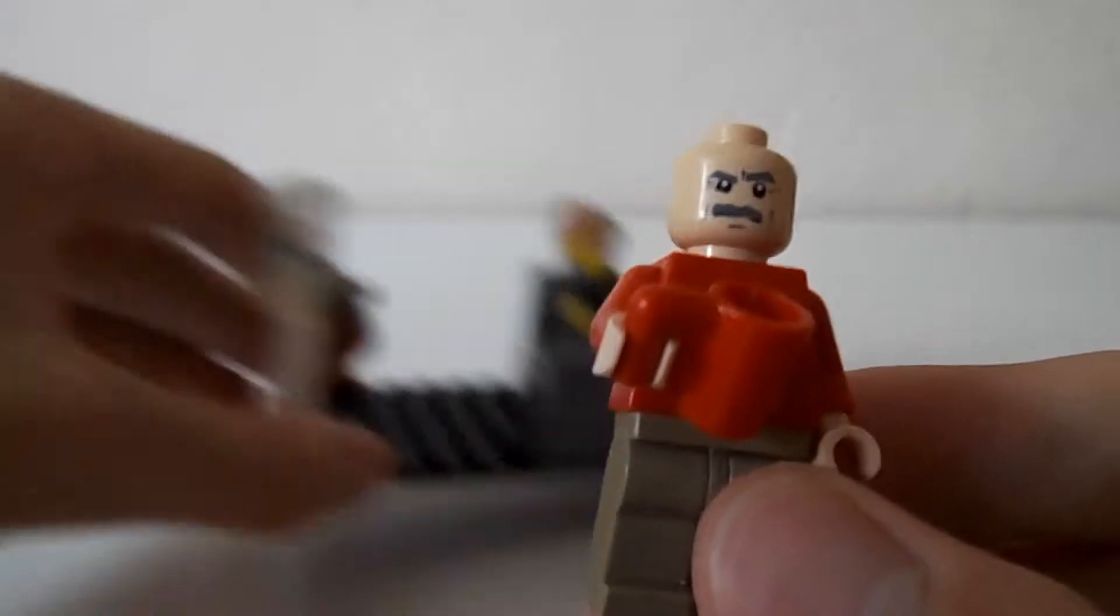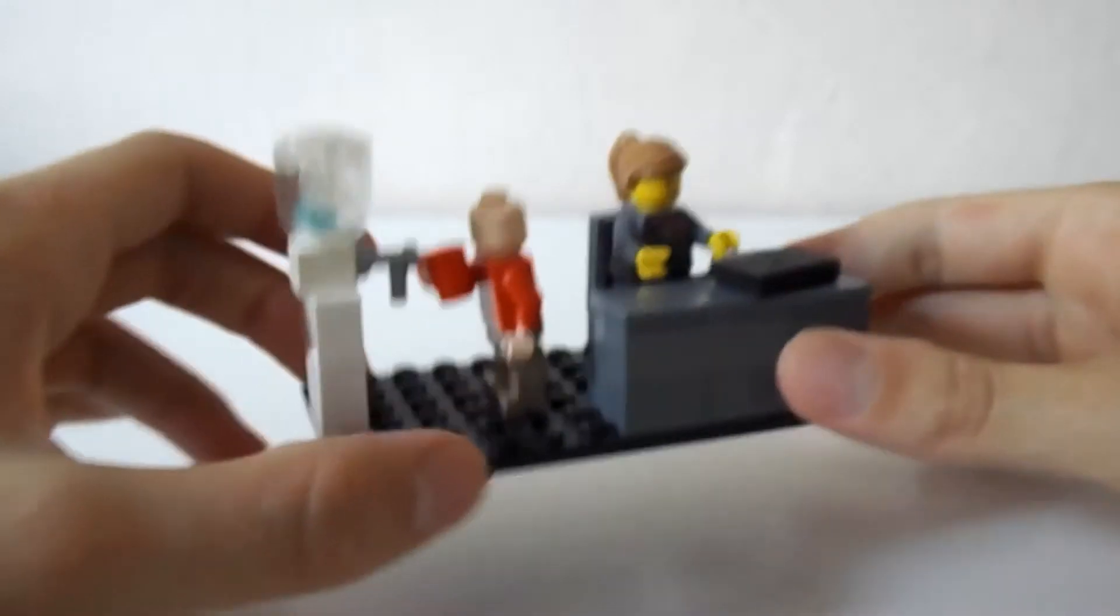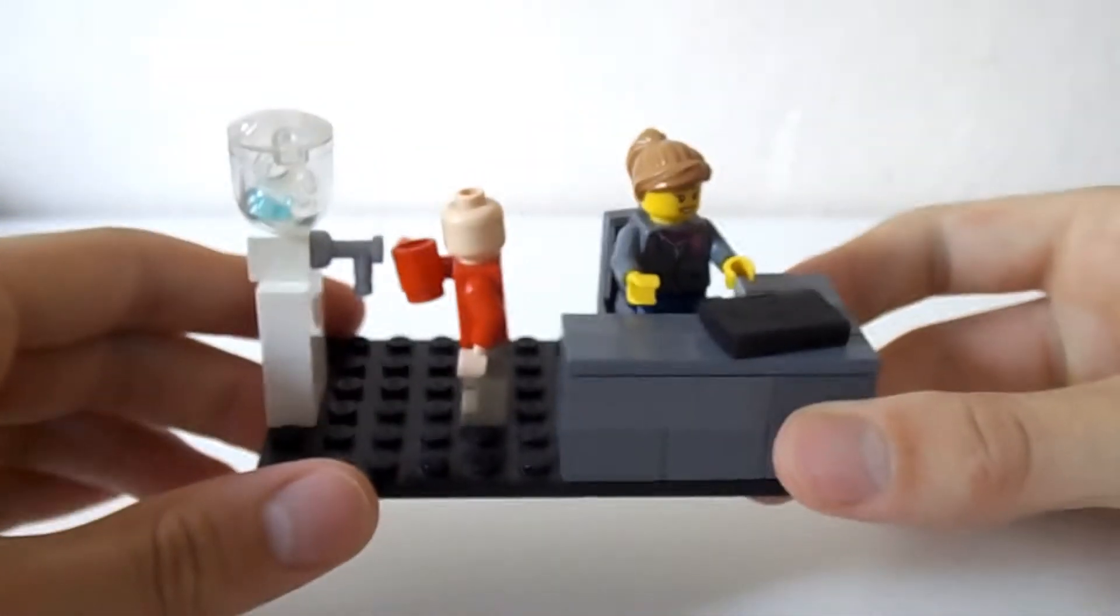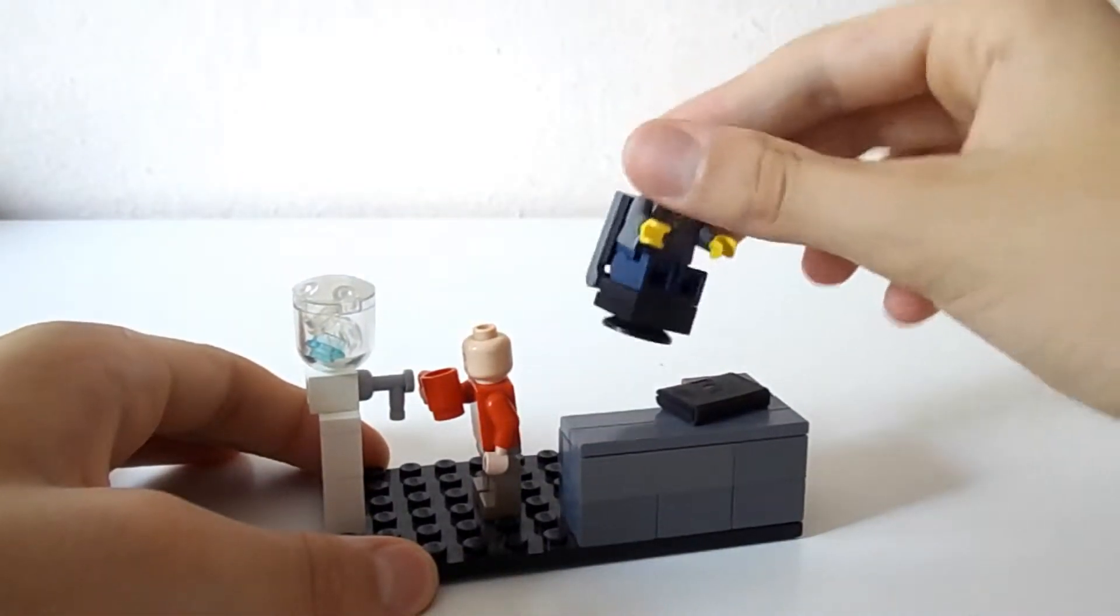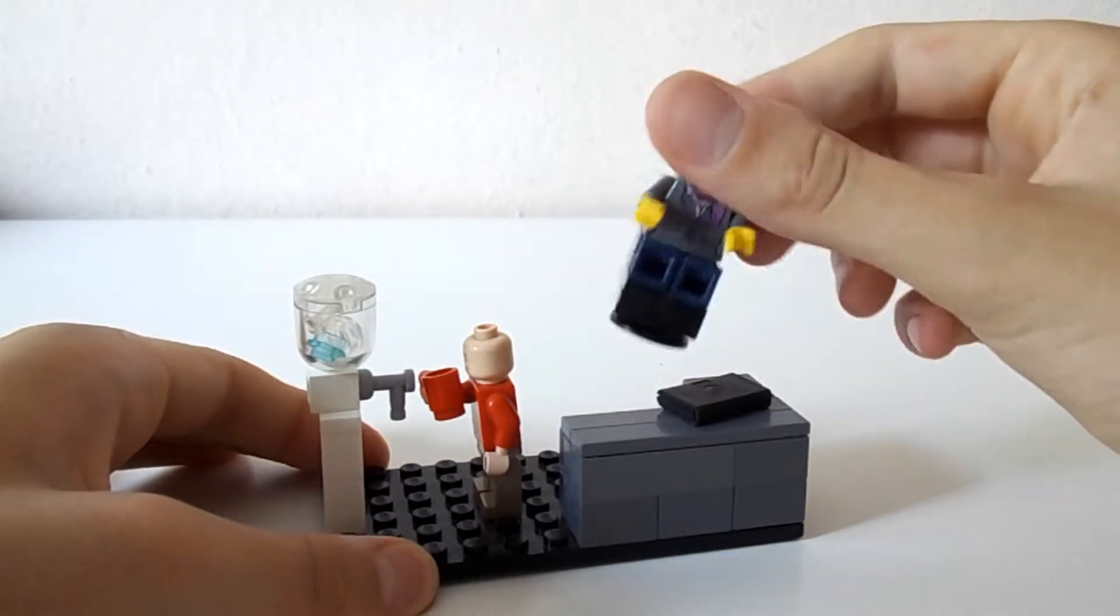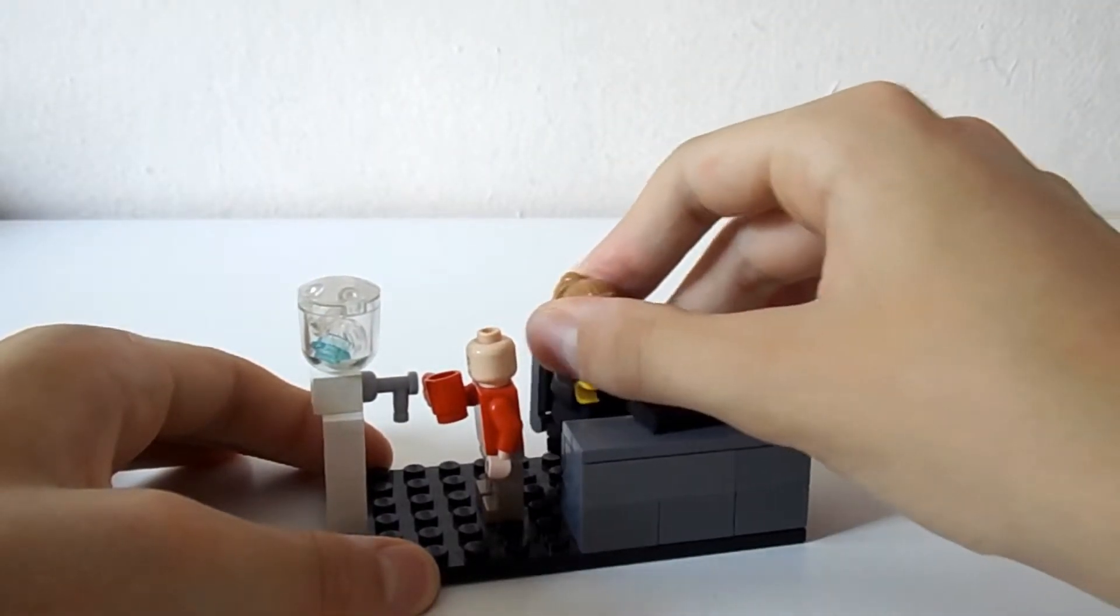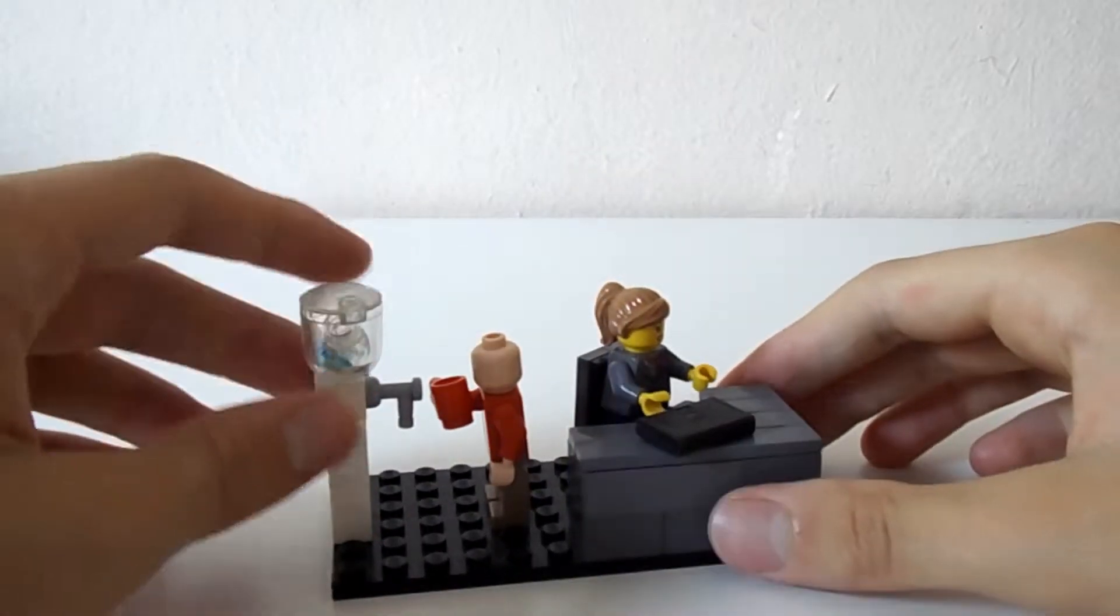Today I'm presenting this mini MOC that I made. It's like a small office space with a desk, a chair - these typical chairs that move from side to side - and a water machine.